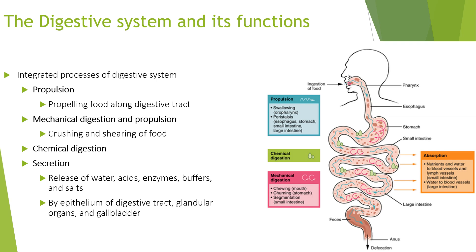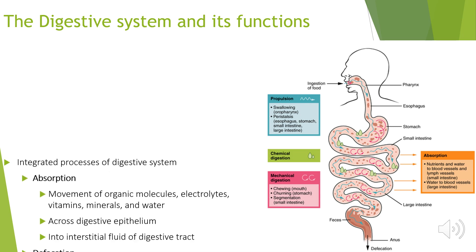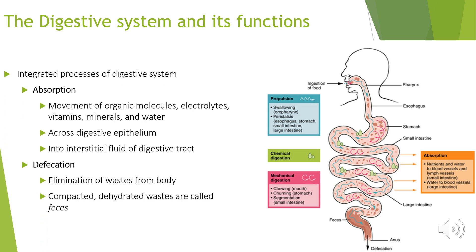These processes involve the epithelium of the digestive tract, glandular organs, and the gallbladder. Absorption involves the movement of organic molecules, electrolytes, vitamins, minerals, and water across the digestive epithelium into the interstitial fluid of the digestive tract. Defecation is the elimination of waste from the body; compacted dehydrated waste is called faeces.